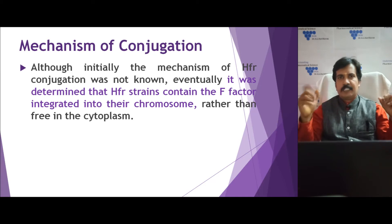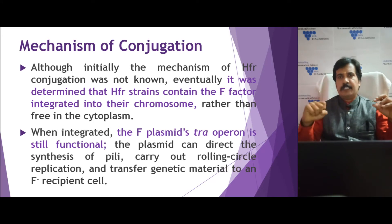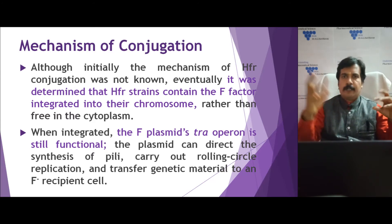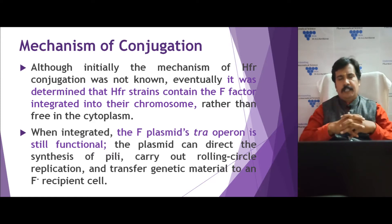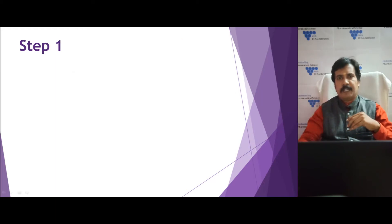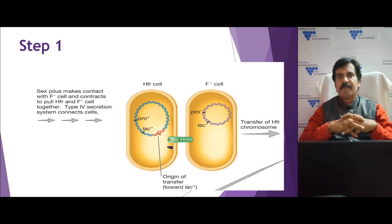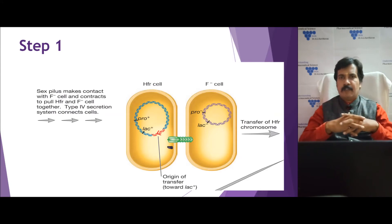Since the fertility factor is present in the chromosome, the chromosome itself carries other genes like the transfer gene — the tra operon — the pili-synthesizing gene, the type 4 secretion system needed for genetic material transfer, and the rolling circular replication process. The HFR cell secretes the type 4 secretory system, which helps in the biogenesis of pili, and the pili extend slowly.